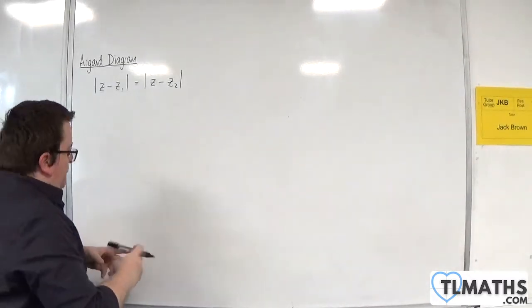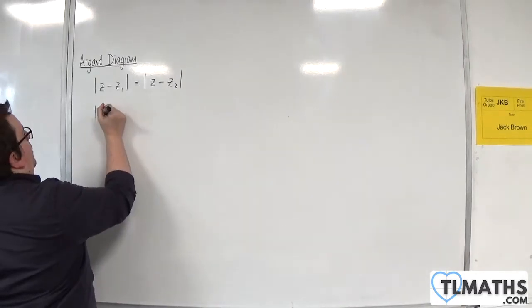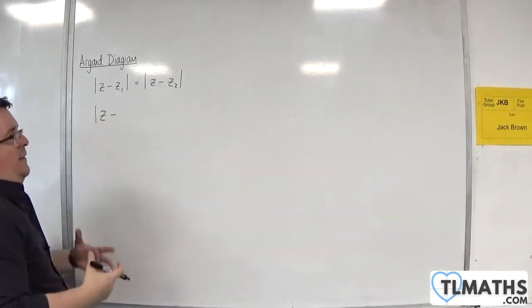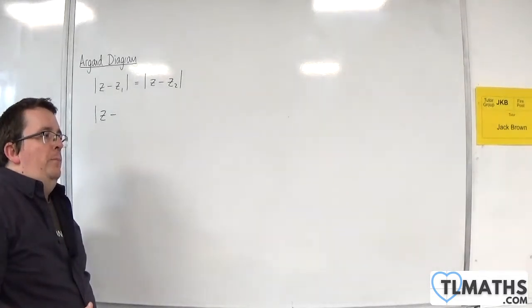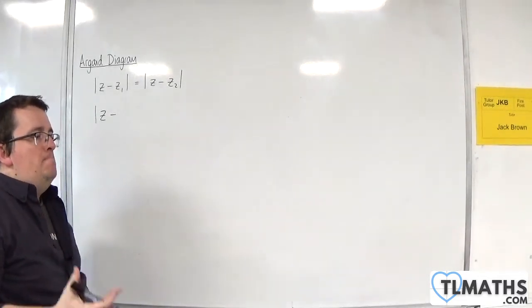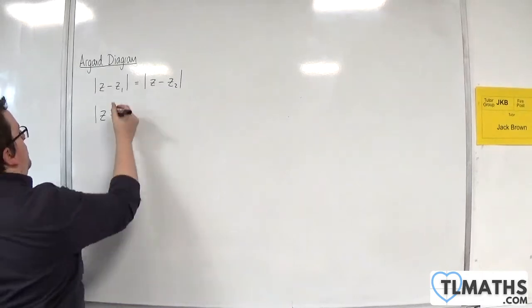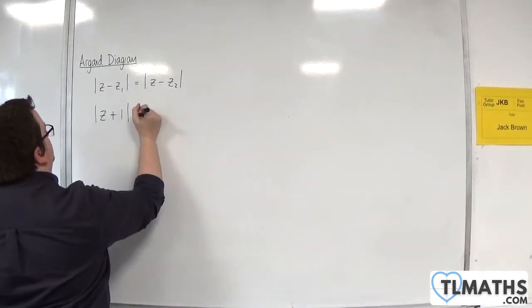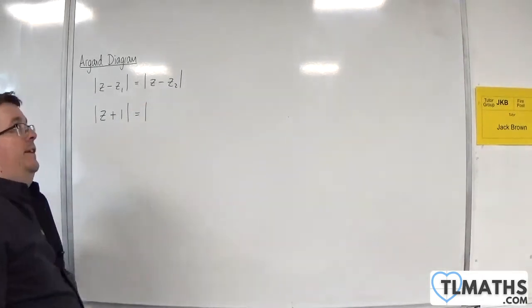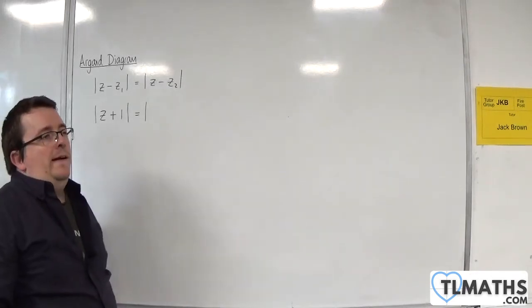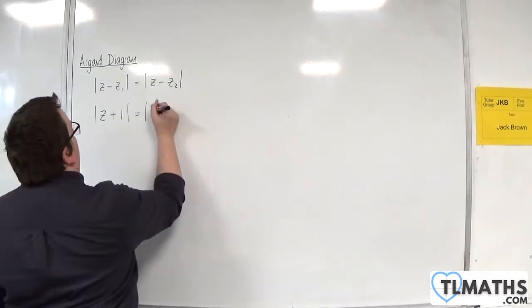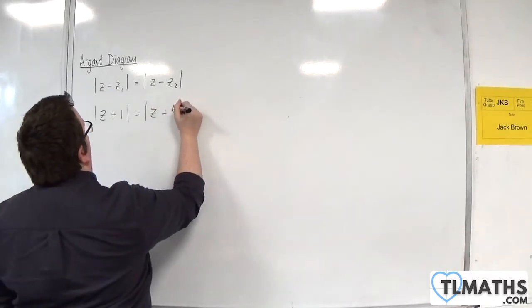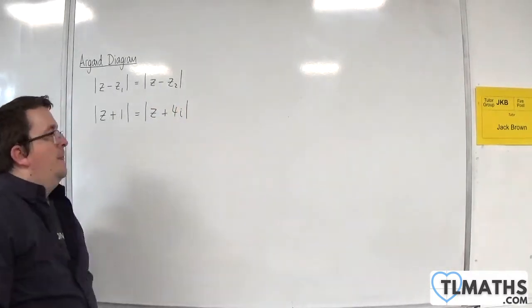Let's explore this a little bit further using an example. Let's say we use the example of z - z1. Let's put it at -1, so we're going to have z + 1. And let's make this -4i, so z + 4i.